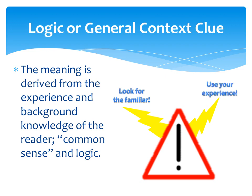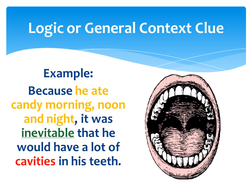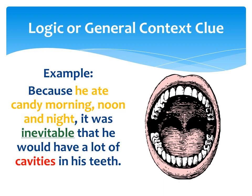With logic or general clues, the meaning is derived from the experience and background knowledge of the reader, common sense, and logic. Signals for logic context clues are sometimes difficult to spot. A reader needs to look for information that is familiar within the passage or sentence. Let's look at an example of a logic context clue.